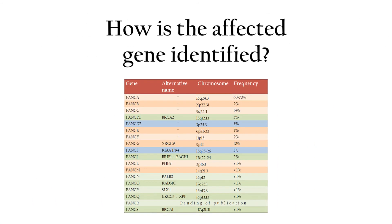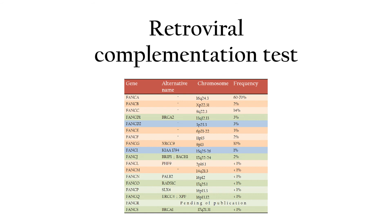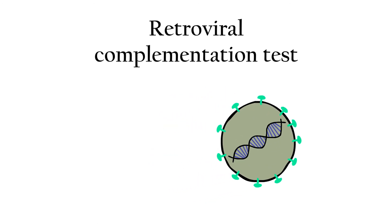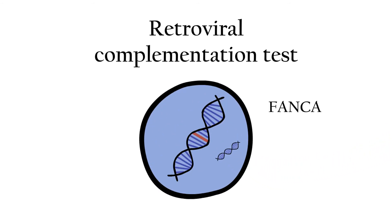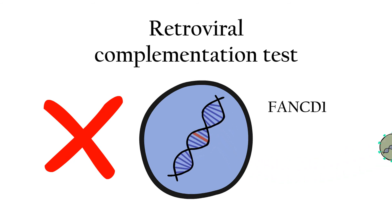How do we identify the disrupted gene? A retroviral complementation test is needed. In this test, cells are infected with a retrovirus that contains a DNA sequence of a healthy Fanconi gene. Therefore, if the mutation that caused Fanconi anemia disrupted the same gene present in the retrovirus, the DNA sequence of the retrovirus will complement the cell. The cell will recover and pass the test. If the cell doesn't recover, this test is tried once again with another retrovirus that contains a different Fanconi gene. This pattern is repeated until the disrupted gene is found.